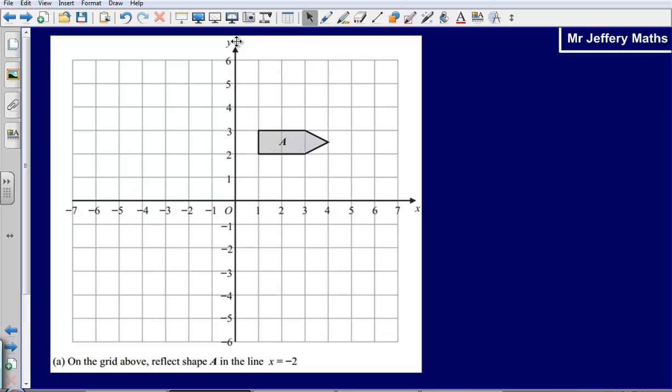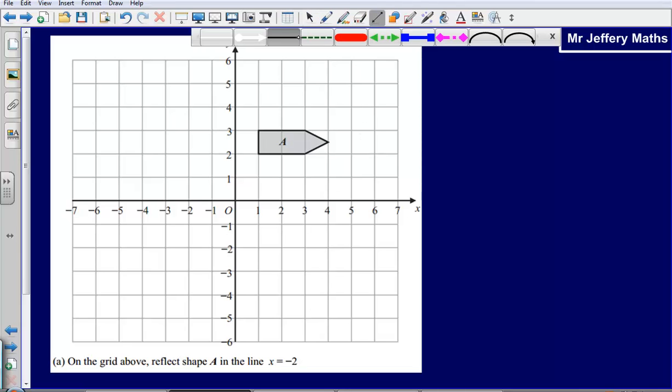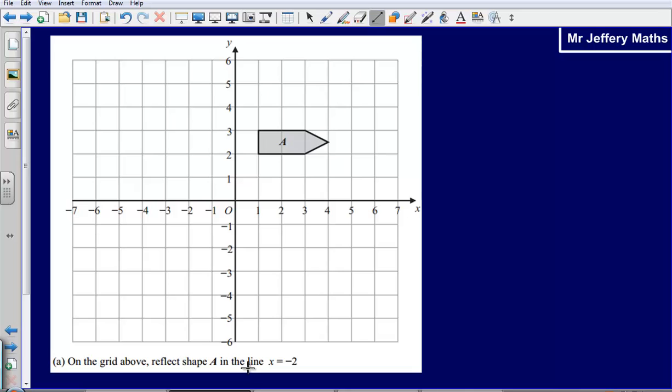Second question, take a look at reflection. So on the grid above, reflect shape A in the line x equals minus two. So this may happen on an exam where you are not given a specific mirror line and you need to draw that in. So we are told to reflect it in the line x equals minus two. Now where is the line x equals minus two? Well, it is on our x axis. So where is minus two here? That is going to be that point there. So that means that a line x equals minus two is just a line that goes right through negative two.